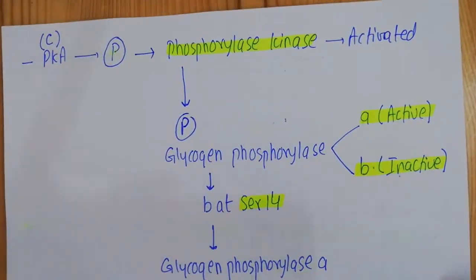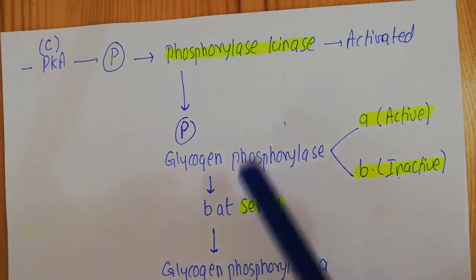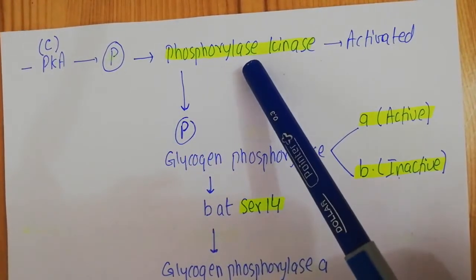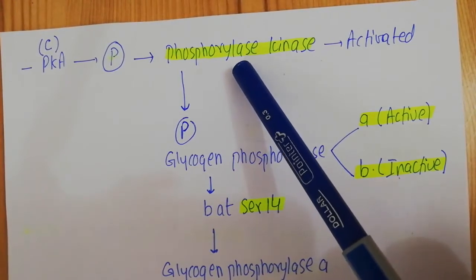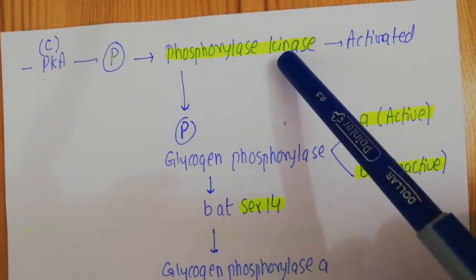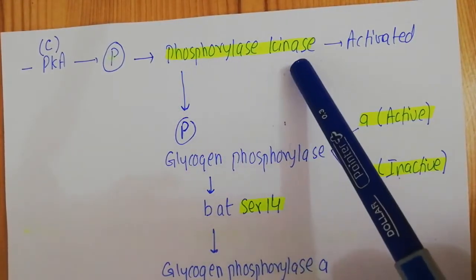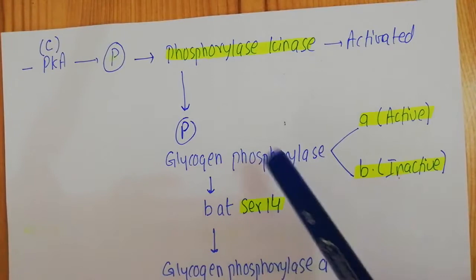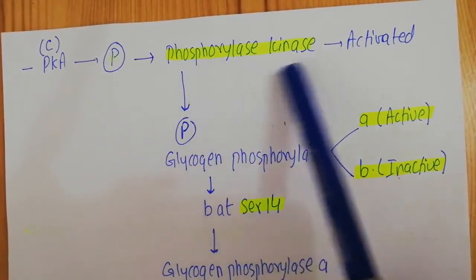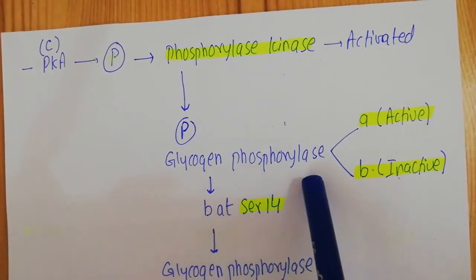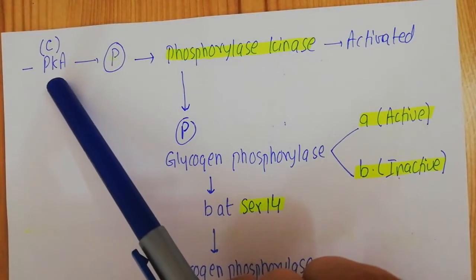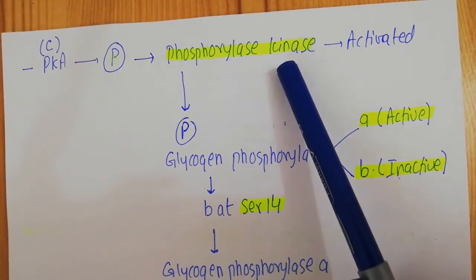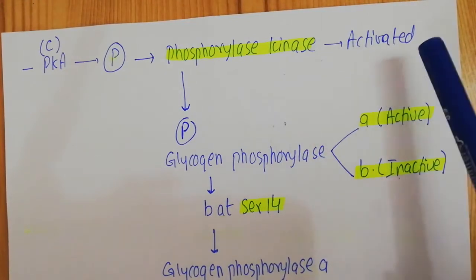Another important target of the protein kinase A catalytic subunits is phosphorylase kinase. It is important not to confuse phosphorylase kinase with glycogen phosphorylase — these are two distinct proteins. The catalytic subunits of protein kinase A phosphorylate phosphorylase kinase, and when phosphorylase kinase gets phosphorylated, it becomes activated.